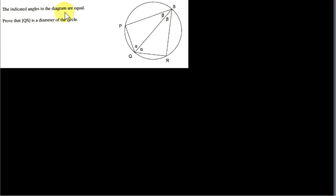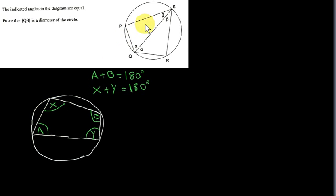The indicated angles in the diagram are equal — the two alphas and the two betas. Prove that the line QS is the diameter of the circle. A theorem that we use to prove this result is the following: if we take a cyclic quadrilateral — a four-sided figure whose corners are points on a circle — then opposite angles of a cyclic quadrilateral sum to 180 degrees. So A and B are a pair of opposite angles whose sum is 180 degrees, and X and Y are a pair of opposite angles whose sum is also 180 degrees.